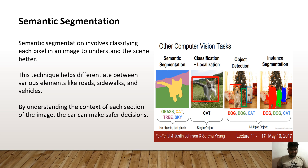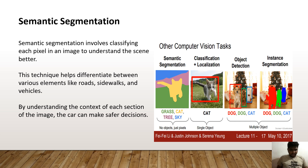Semantic segmentation involves classifying each pixel in an image to understand the scene better. The image is divided into individual pixels which are then analyzed. This technique helps differentiate between various elements like roads, sidewalks and vehicles. By understanding the context of each section, the car can make better navigational decisions.